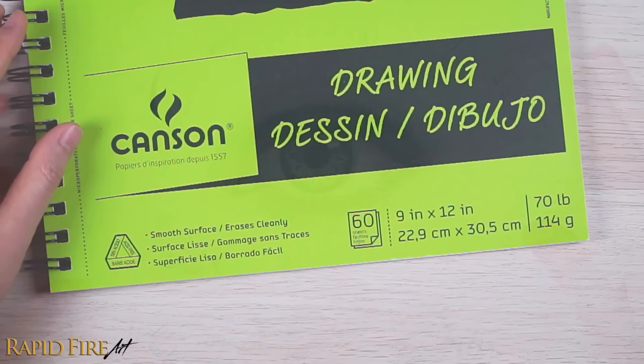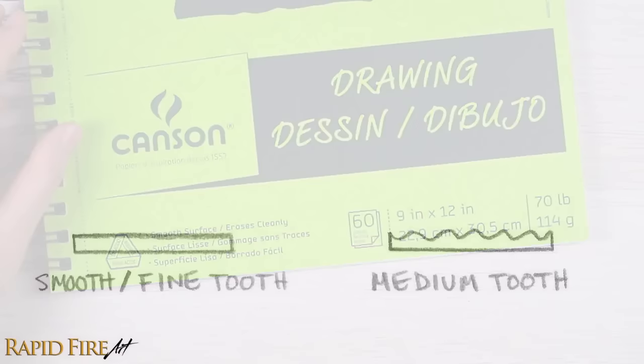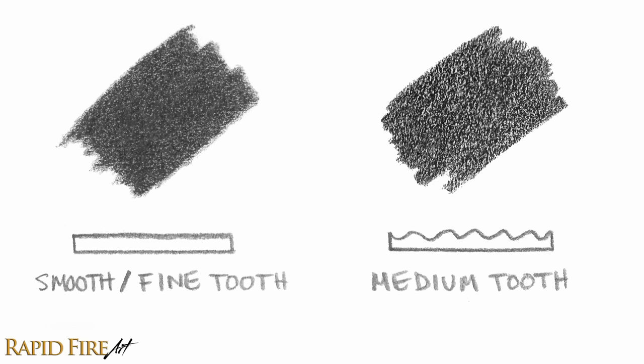Choose a paper texture based on your preference. This is usually labeled as the tooth. A smooth or fine tooth will give you a smoother result than medium-tooth paper and is great for detailed drawings.